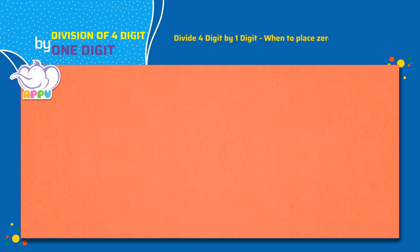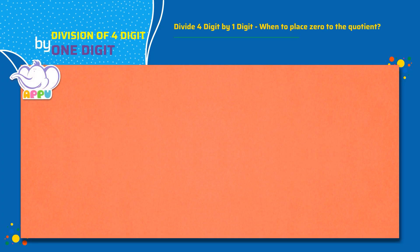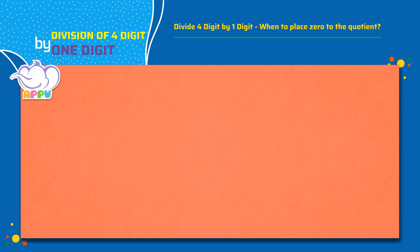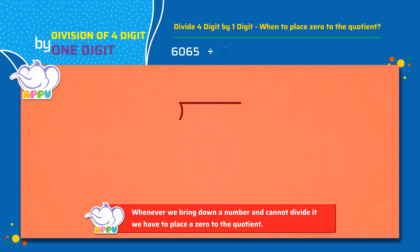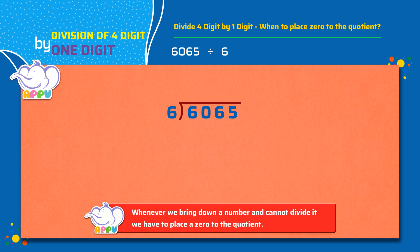Divide 4 digits by 1 digit. Divide 6065 by 6. We write the division bracket and write 6 outside the bracket and 6065 inside the bracket.